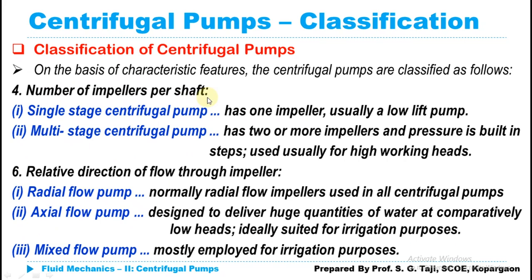The number of impellers per shaft depends on how much head you want to develop. For lower head requirements, a single-stage centrifugal pump is sufficient. For high head development, multiple impellers fixed on the same shaft are needed — known as a multi-stage centrifugal pump. According to the relative direction of flow through the impeller, a centrifugal pump can also be classified as radial flow, axial flow, or mixed flow pump. The centrifugal pump falls under the radial flow category, where discharge enters and leaves radially.